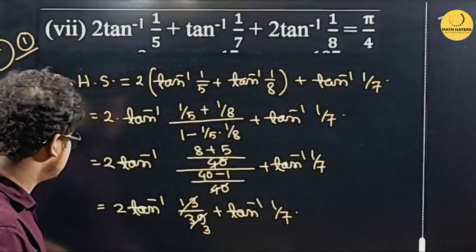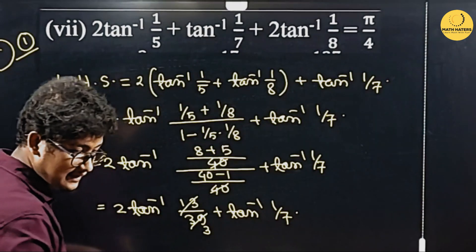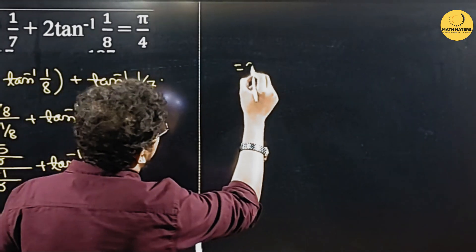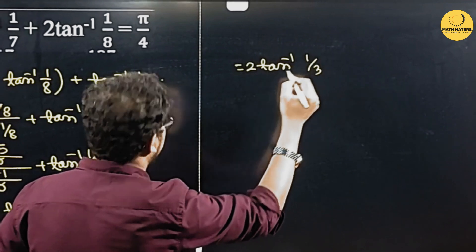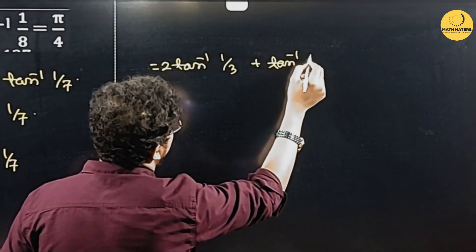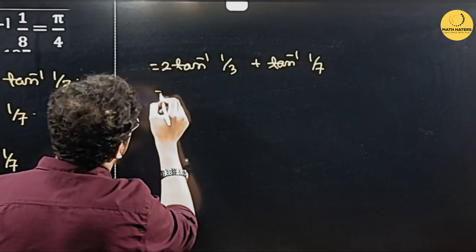So students, we have 2 tan inverse one third. Look, two tan inverse one third plus tan inverse one by seven. We have to write the line.